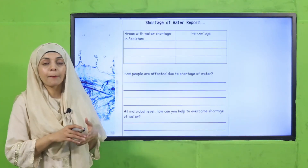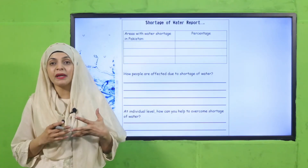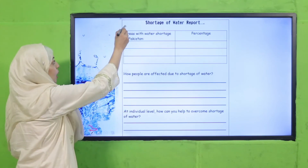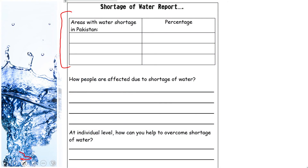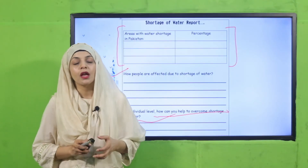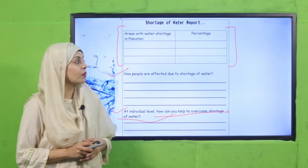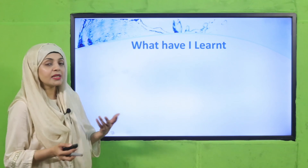You need to prepare a report. Write down the areas, the percentage of water shortage, how people are affected, and at an individual level how you can help to overcome the shortage of water. Complete this report at home as homework and then submit it in class.